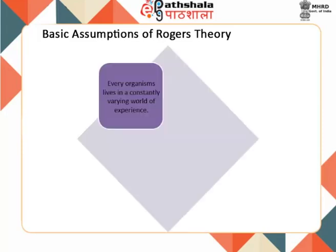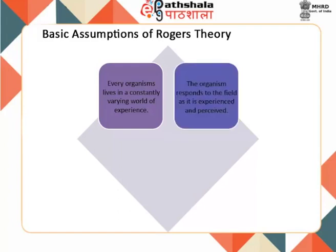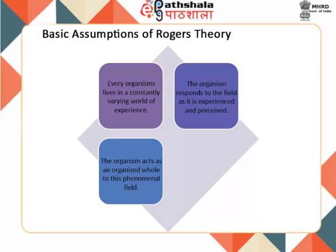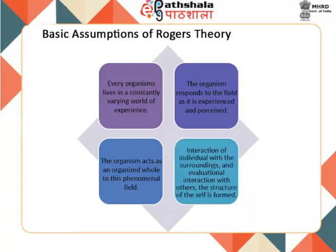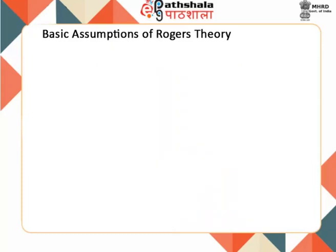The 19 basic principles are as follows. First, every organism lives in a constantly varying world of experience of which they are the centre. Second, the organism responds to the field as it is experienced and perceived — this perceptual field is reality for the individual. Third, the organism acts as an organized whole to this phenomenal field. Fourth, as a consequence of interaction of the individual with the surroundings and, principally, as a result of evaluational interaction with others, the structure of the self is formed — an organized, fluid, but consistent conceptual configuration of perceptions of features and relationships of the 'I' or 'me,' composed with values committed to these notions.